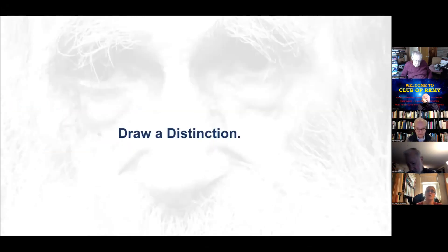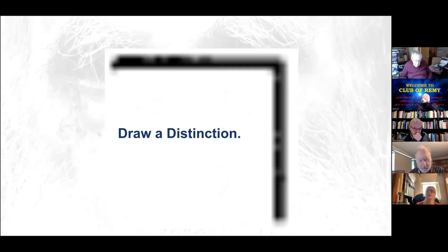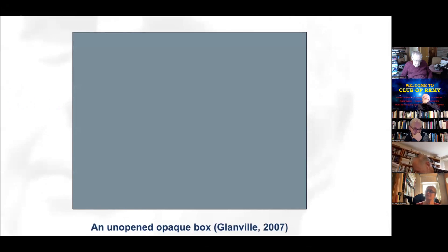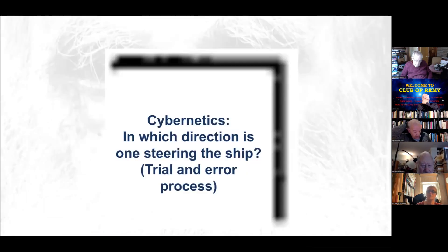As Glanville says, everything starts with a distinction. A distinction — I just drew one here — can be treated as an unopened, opaque box. So the distinction in our mind is a box and we don't know what's inside it. We can open it immediately or keep it closed forever.